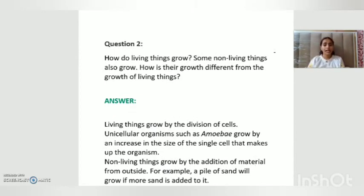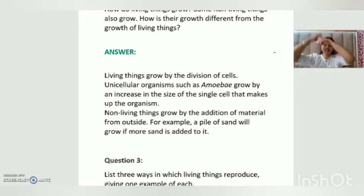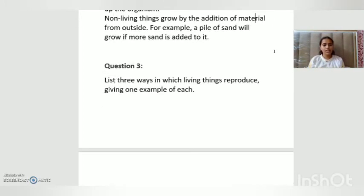Question number two: how do living things grow? Living things grow by the division of cells. Unicellular organisms such as amoeba grow by increase in the size of the single cell that makes up the organism. Non-living things grow by addition of material from outside — for example, a pile of sand will grow if more sand is added to it.